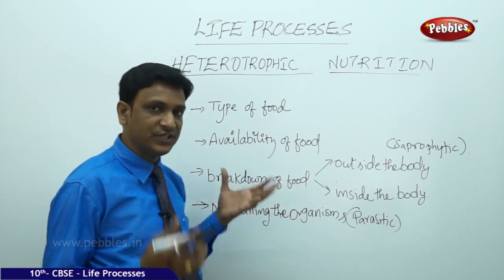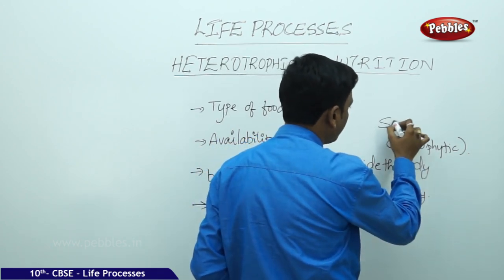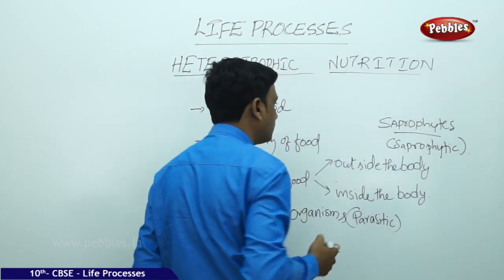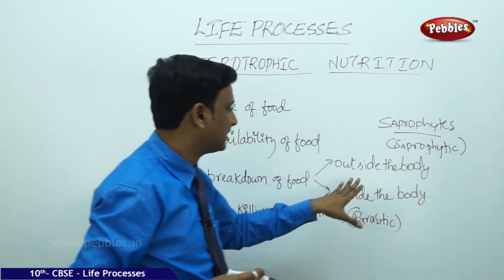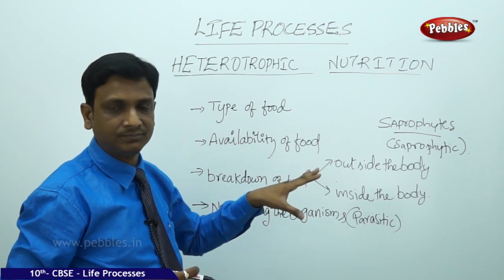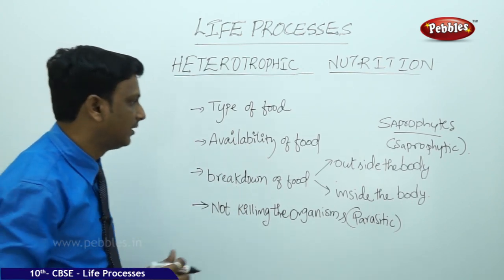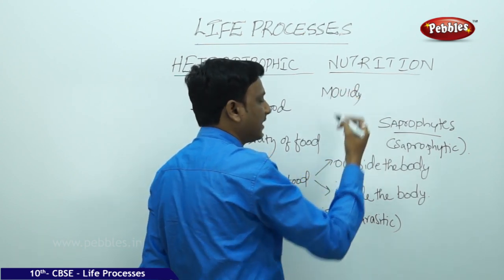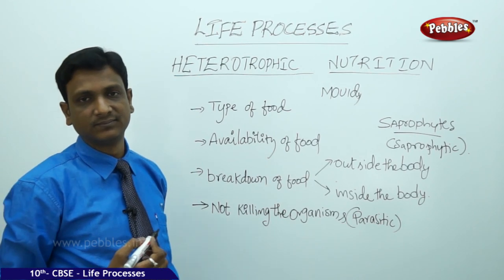Organisms that feed on food being broken down outside their bodies are called saprophytes, and this mode of nutrition is called saprophytic nutrition. Saprophytic nutrition is a part of heterotrophic nutrition. It means the organisms feed on matter from organisms that have already died and are being broken down. Examples include mold, bread molds, and mushrooms — all types of fungus.